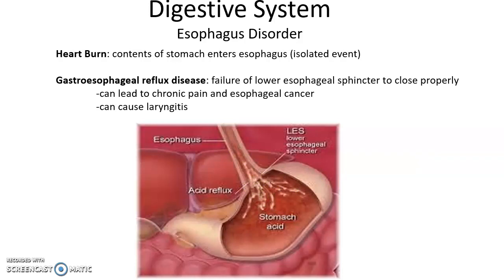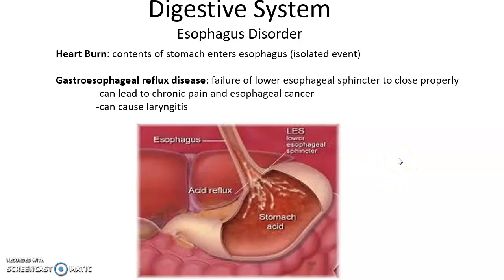Heartburn is an isolated event that occurs rarely. However, if it occurs frequently, then you may be suffering from gastroesophageal reflux disease, where the lower esophageal sphincter is not closing properly, causing lots of acid to back up into the esophagus, leading to chronic pain and increasing the likelihood of esophageal cancer. In some rare cases, the acid can travel all the way up the esophagus and end up in the larynx, causing laryngitis. This is the end of part one of this lecture.